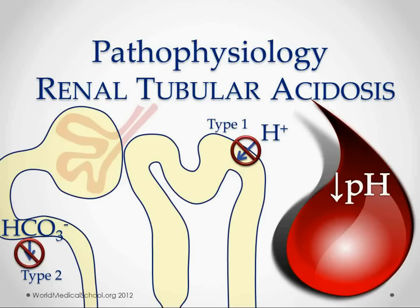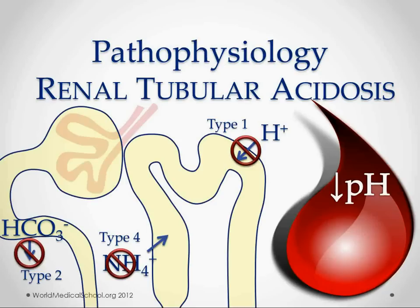There's also a redheaded stepchild of renal tubular acidosis and that's type 4. Type 4 is a problem with aldosteronism, which isn't a problem in the renal tubules. So it might not involve the renal tubules or acidosis, but we're going to call it renal tubular acidosis anyway. We won't go too much into the mechanisms there, but we'll talk about each of these in just a second.